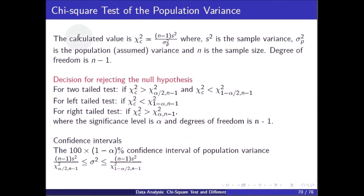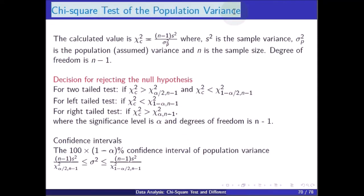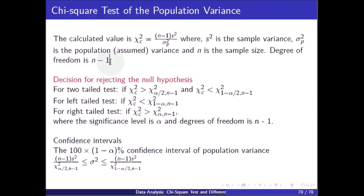For the chi-square test of the population variance, the calculated value is chi square equals (n minus 1) times s square divided by sigma p square, where s square is the sample variance, sigma p square is the assumed population variance, n is the sample size, and the degree of freedom is n minus 1.